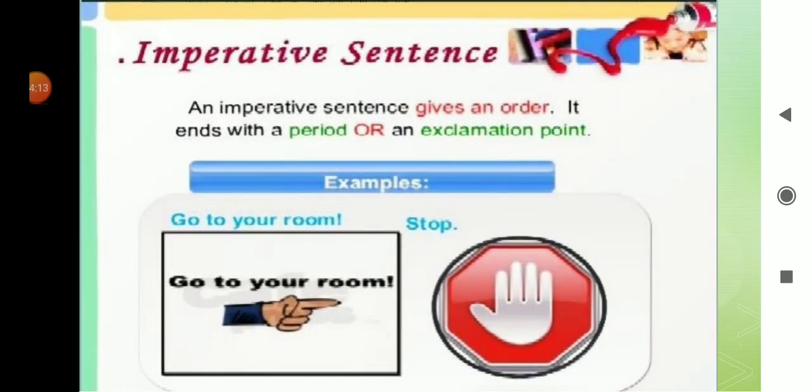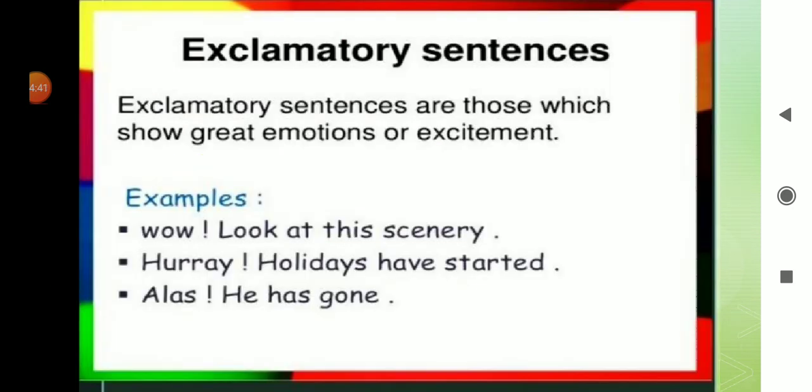Next one is imperative sentence. What's an imperative sentence? An imperative sentence gives an order, command, advice, suggestion and request. It ends with a period or an exclamation point. For example, go to your room. Stop. Please give me a pen. These sentences are examples of imperative sentences.